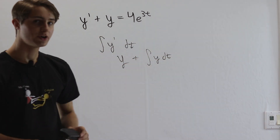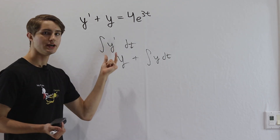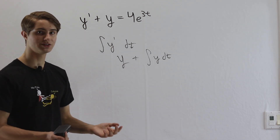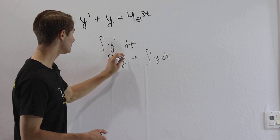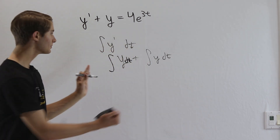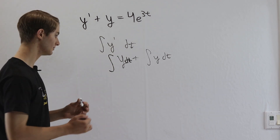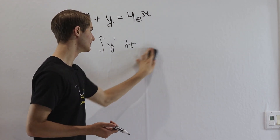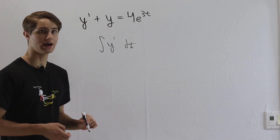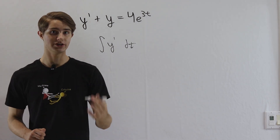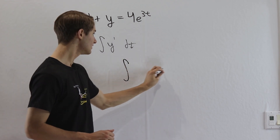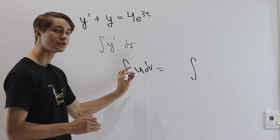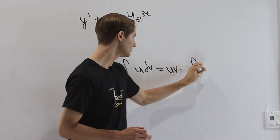Now we haven't gotten any closer to solving for y because this integral is just as hard to deal with as this derivative. Notice the problem is that we want to integrate y' more times than we want to integrate y. Because if we integrate y' twice instead of once, then we would have the integral of y dt plus the integral of y dt, and we could add those together, which would be much easier to deal with. What we really want is to be able to integrate y' more times than we integrate y.